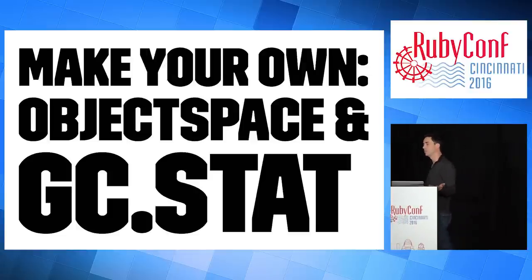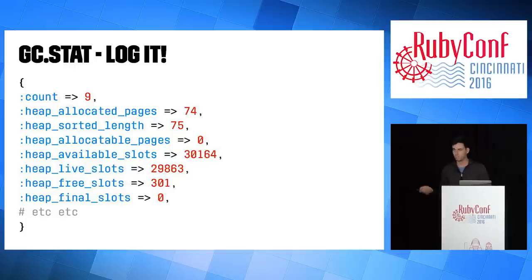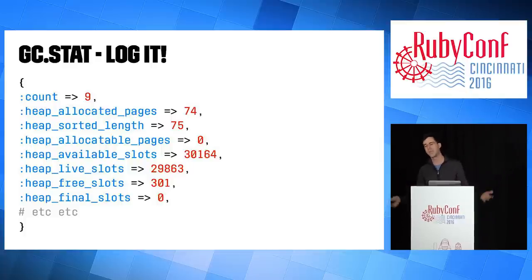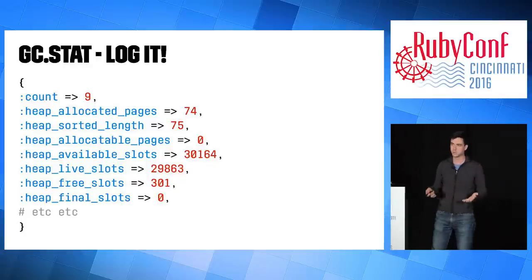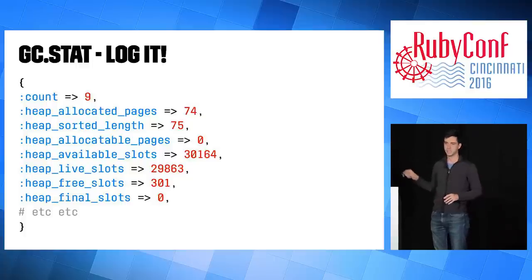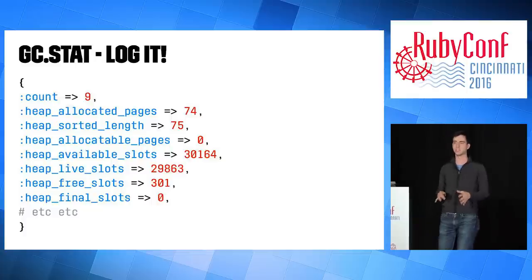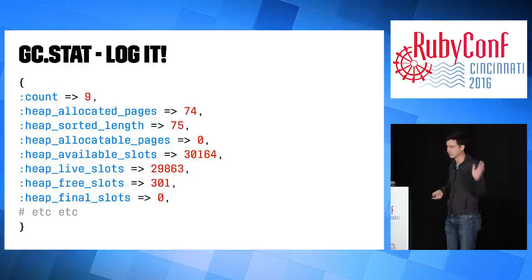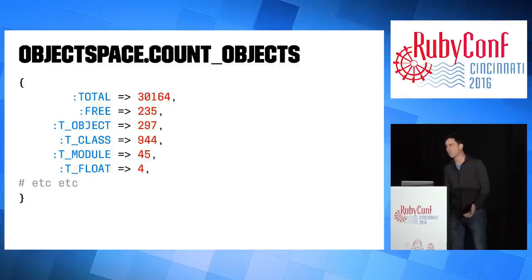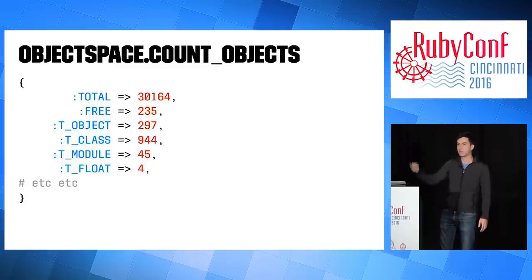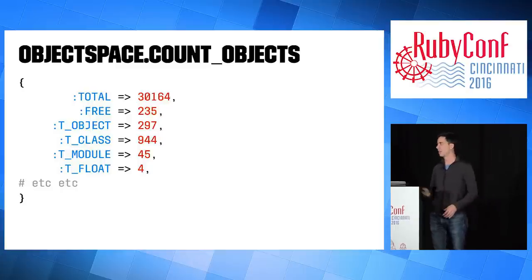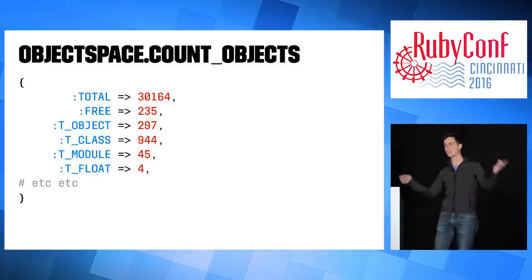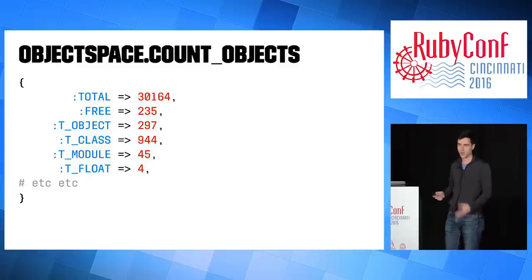You can also build your own with ObjectSpace and GC.stat. GC.stat is available in every Ruby process — it's a hash with a bunch of information. The keys are unfortunately opaque, but simple ones include how many GCs are you doing. It's a great way to count GCs during an action. Put a before filter that checks GC.stat, then an after filter to compare the difference. ObjectSpace.countObjects does the same thing. If in your after filter you see that T_STRING objects grew by six million, you know that's where the problem lies and can dig in further.